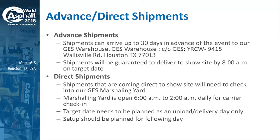For advanced and direct shipments: advanced shipments can arrive in the warehouse up to 30 days in advance of our event. The warehouse is located at 9415 Wallaceville Road in Houston, Texas. Shipments sent to the advanced warehouse are guaranteed to be delivered to show site by 8 a.m. on your target date. Direct shipments coming directly to show site need to check into the GES Marshaling Yard, located at 401 Franklin Street. The Marshaling Yard is open daily from 6 a.m. to 2 p.m. for carrier check-in.